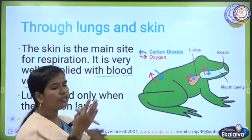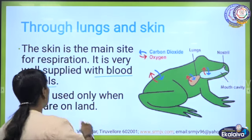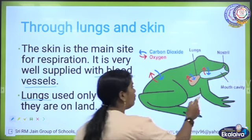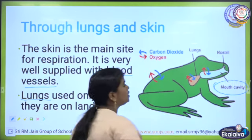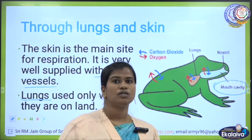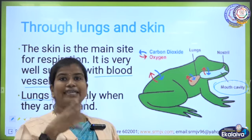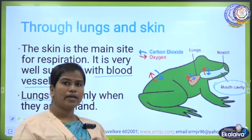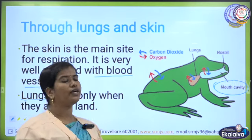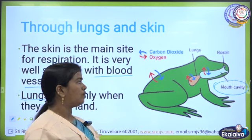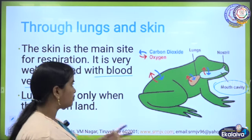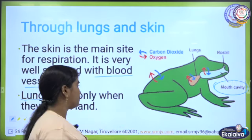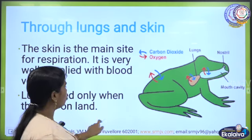When amphibians are on land, they use lungs for respiration. They have a mouth cavity which is highly supplied with blood vessels for gas exchange — oxygen enters the body and carbon dioxide is released out. This mouth cavity is used for respiration through lungs.